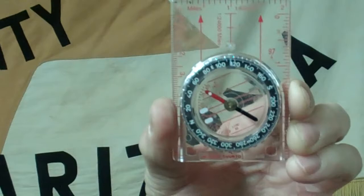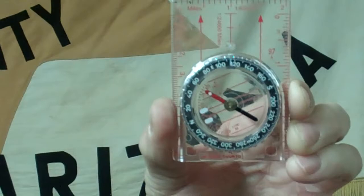Also on this compass we have two arrows. These are known as a lever line or the direction of travel lines.